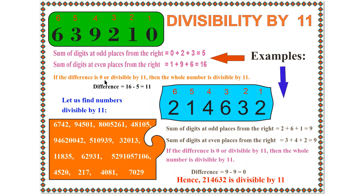If the difference between the two sums is 0 or divisible by 11, then the whole number is divisible by 11. The difference is 16 minus 5 equals 11. Since 11 is divisible by 11, we conclude that 639210 is purely divisible by 11.